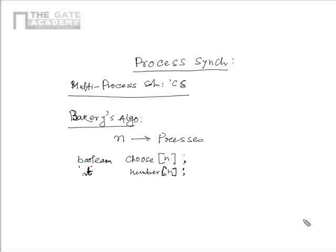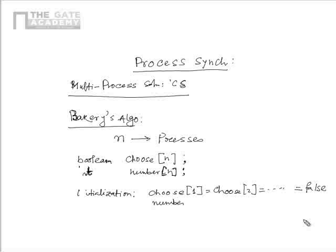Initialization of these variables is done as follows: choose[1] = choose[2] = ... = choose[n] = false, so all boolean variables are initialized to false. Similarly, all number variables are initialized to 0.